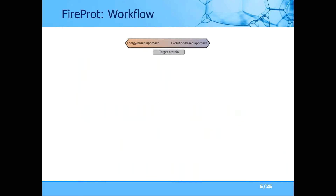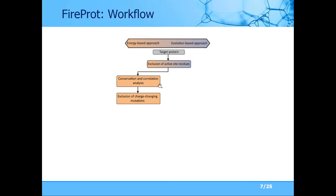As with most of our tools, we provide an interactive user interface where users can see all design mutations and visualize them on the protein structure. We have two separate branches — energy and evolution. Users provide only the protein structure. From this structure we exclude all residues close to active sites to avoid damaging protein function. We also remove conserved and correlated positions, as these are presumably important for function, folding, or stability. We additionally exclude mutations that would cause charge changes on the protein surface, as force field methods often remove surface charges, causing the protein to be unable to fold in the lab.